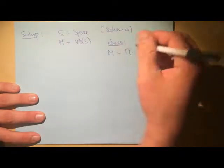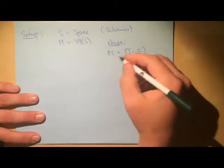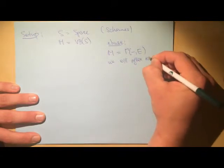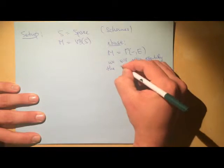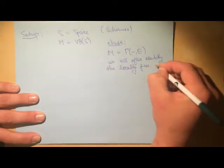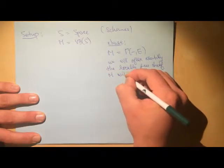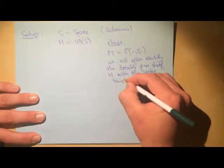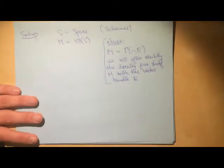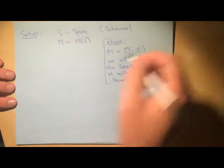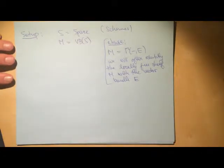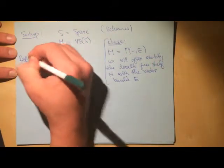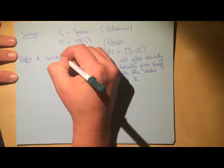We often identify the locally free sheaf M with the physical vector bundle E. This identification happens, for example, with derivations and the tangent bundle. With these ingredients in place, I can define a connection on M.